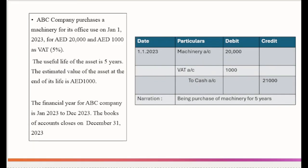Let's see what is the journal entry when a company purchases an asset. The purchase happens on 1-1-2023. Machinery account debited 20,000. VAT account debited 1,000. To cash account 21,000. This 1,000 dirhams of VAT can be reclaimed by the company.